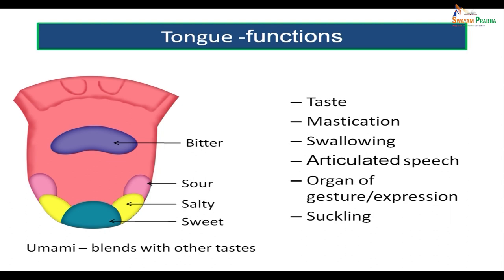The functions of the tongue notably include taste. We have the four basic senses of taste. At the tip of the tongue, we feel the sensation of sweetness. On the sides, we feel the sensation of salty and sourness. At the back of the tongue, we can feel the sensation of bitterness. In addition, there is a newer taste called umami, which is actually a savory sensation associated with monosodium glutamate — Ajinomoto — which comes from cooked meats.